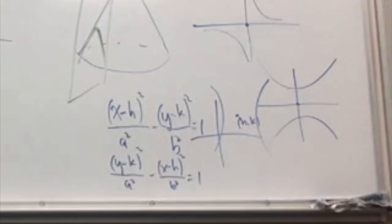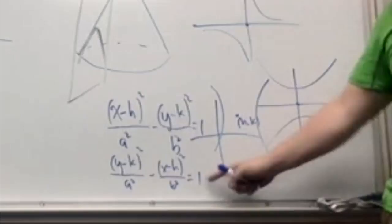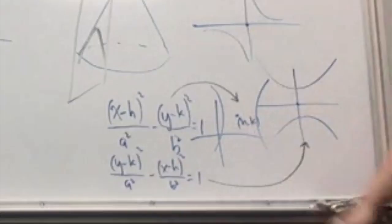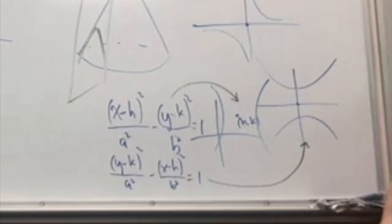The first form has two x-intercepts and no y-intercepts; the second form has two y-intercepts and no x-intercepts. A hyperbola that opens left and right is of the first type. Now, is y equals one over x a hyperbola? Yes — it's a hyperbola that's been rotated by 45 degrees. One over x squared, however, is not a hyperbola — that's a different function.